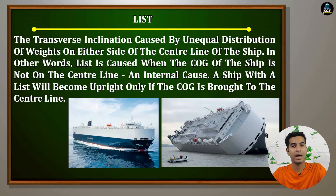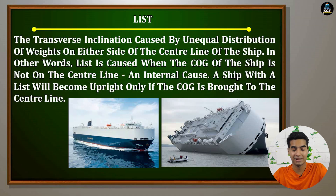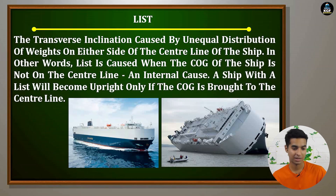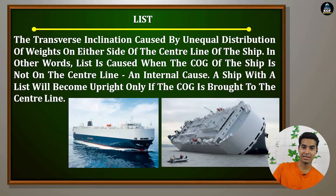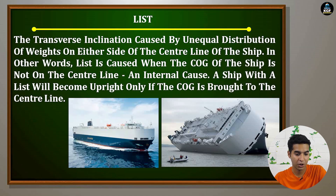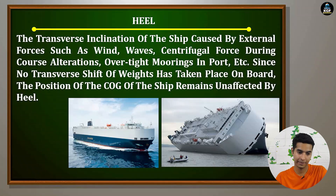That is the major cause. If the vessel is in heel condition, it means the G is on the centerline, but the swell and the current is taking the ship towards the port side or towards the starboard side — that is why it looks like list, but it is in the heel condition. A ship with a list will become upright only if the COG is brought back to the centerline.